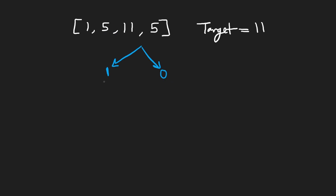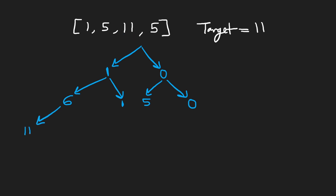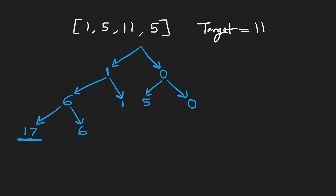The next value is five, so for each of these paths we can choose five or not. If we choose five on the first path we get six; if we don't, we stay at one. On the zero path, if we choose five we get five; if we skip it we stay at zero. Next we get an 11. So 11 plus six gives us 17 — clearly we went over. If we skip the 11 we stay at six. Taking 11 gives 12; skipping gives one. We get 16 here; skip gives five. If we take 11 from zero plus five we get 11. We found our target.